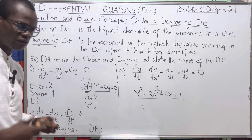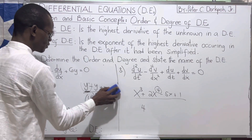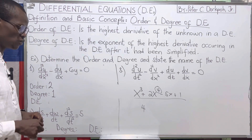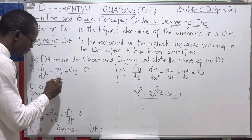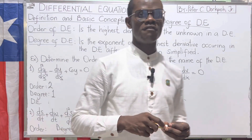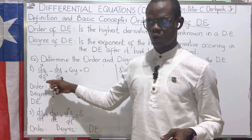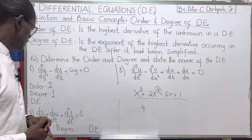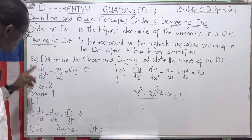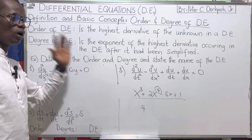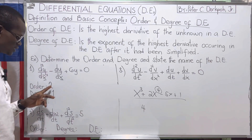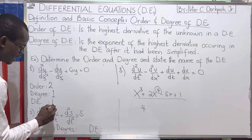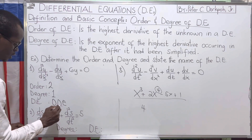Now, what type of differential equation is this? Is it an ordinary differential equation or a partial differential equation? We said whenever we are dealing with a single independent variable — that is x, or t, or whatever independent variable you have — with one or more dependent variables, that is referred to as an ordinary differential equation. Since the only independent variable here is x, this is an ordinary differential equation — ODE.